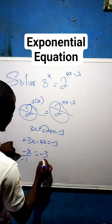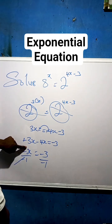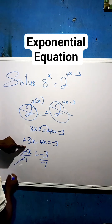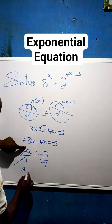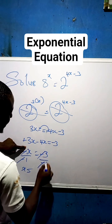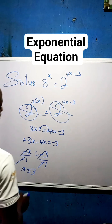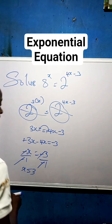We divide both sides by minus 1 to get the value of x. The negatives cancel, so x equals 3. Our answer is x equals 3.